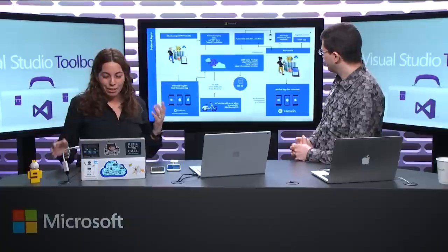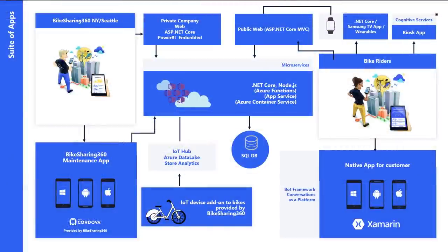A little bit about the architecture. There's a lot of brainstorming that goes into this — there's a million things we thought about that aren't here. We have to keep the scenario simple enough that it's easy to explain and understand. Generally speaking, you have a bike rider who can get a marketing website to learn about the business and sign up. You also have mobile apps — no matter what platform you're using, whether iPhone, Android, or Windows Phone, you can get the app and rent bikes. You also have the kiosk where you can rent a bike without typing anything.